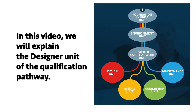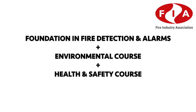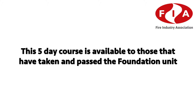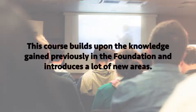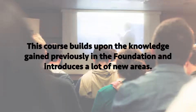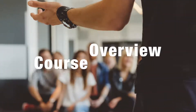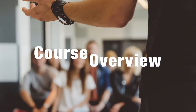In this video, we will explain the designing unit of the qualification pathway. Successful completion of this unit along with the following units on the screen shall give you a full qualification. You'll be awarded the FIA AO level 3 in fire detection alarm design, theory and regulatory requirements. This five-day course is available to those that have taken and passed the foundation unit. The course builds upon the knowledge gained previously in the foundation and introduces a lot of new areas. It has 14 areas of study in total, labelled A to N on the syllabus set by the FIA awarding organisation.